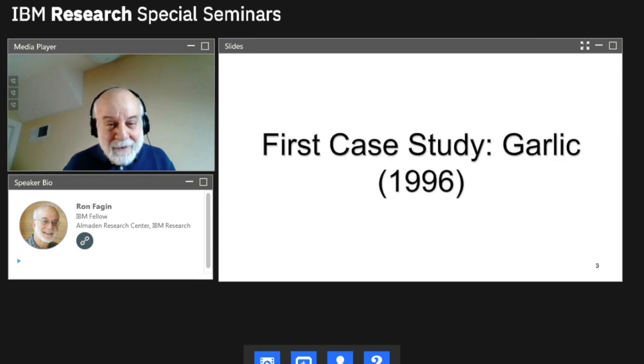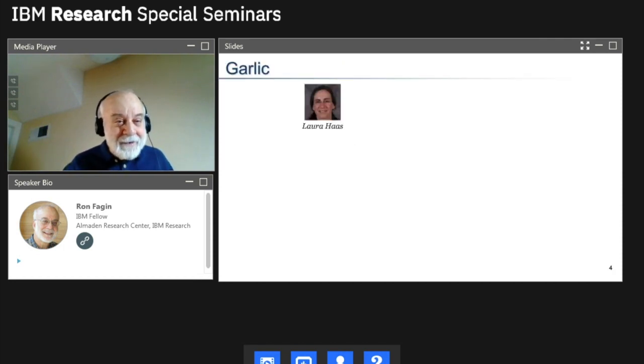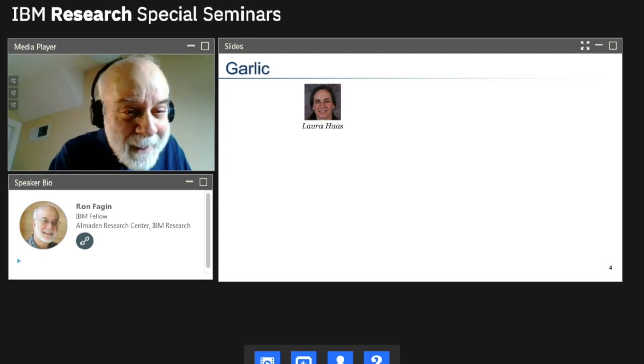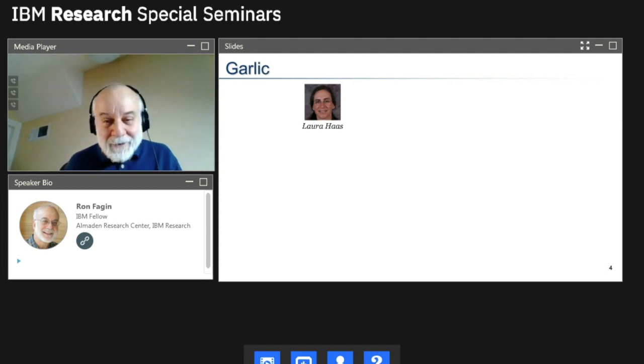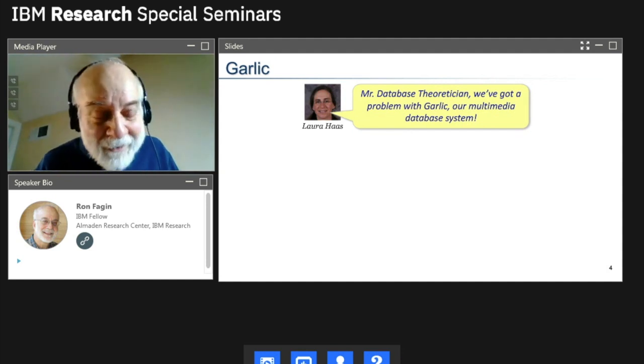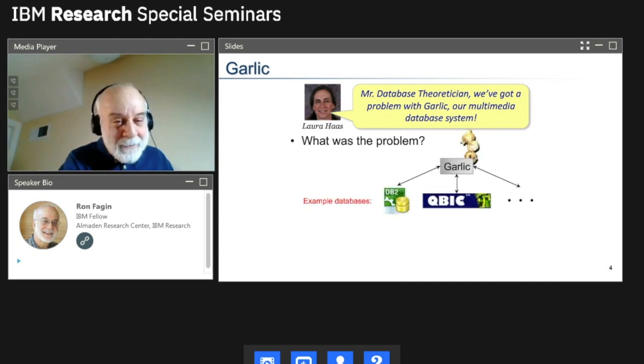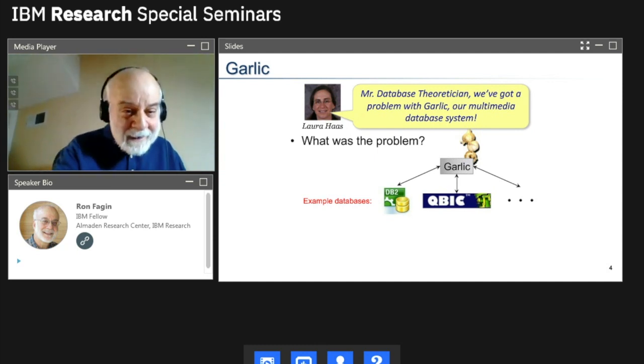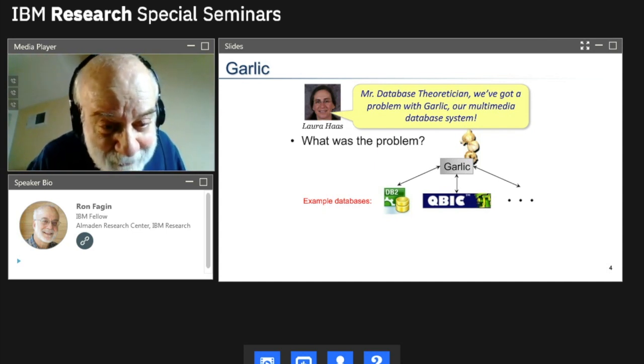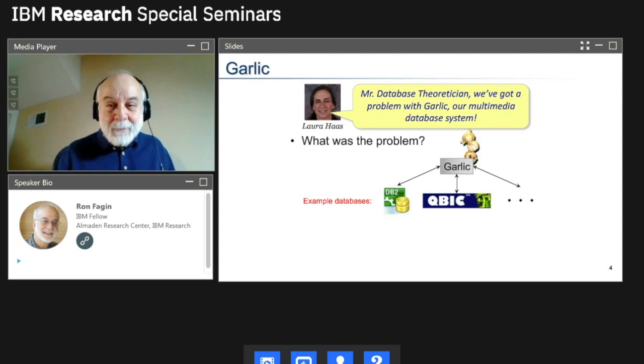So in the first case study started way back in 1996, GARLIC and Laura Haas came up to me. Now, Laura Haas, at the time was just a first level manager, but later on she became an IBM fellow. She became the director of computer science. But she knocked on my door one day way back in 1996 and said, okay, Mr. Database theoretician, we've got a problem with GARLIC, our multimedia database system. Now, what was Laura's problem? Well, here's what it was. So GARLIC is a middleware system. It's on top of other systems. So it's on top of things like DB2, which is a relational database system on top of QBIC, which is queried by image content where you can query on the basis of color, shape, or texture.